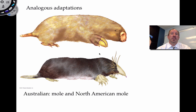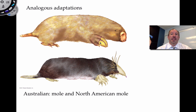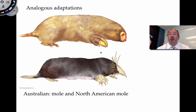Consider the difference between homologous and analogous by looking at the Australian mole versus the North American mole. Both are kind of long, both have extended front claws good for digging, and both have reduced or absent eyes. You might think these must be related, but in fact they're not. These are analogous adaptations that have evolved separately in distant locations, one being an island.